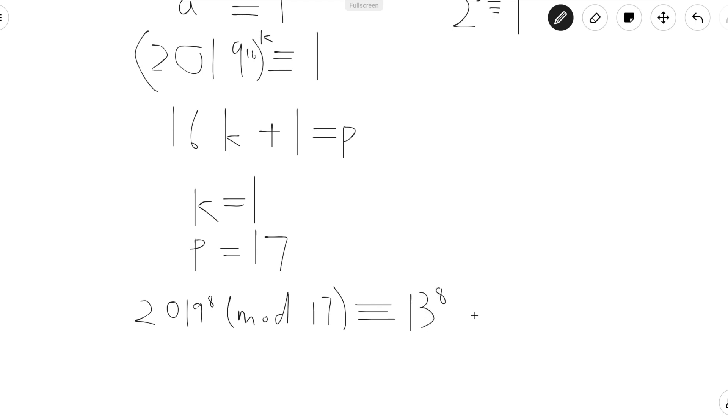Well, 13 to the 8 is simply equal to 13 squared to the 4th, which is 169 to the 4th. Well, 170 is divisible by 17, so 169 would be congruent to negative 1 mod 17. But negative 1 to the 4th would be equal to 1, which isn't congruent to negative 1. So that means p is not equal to 17.